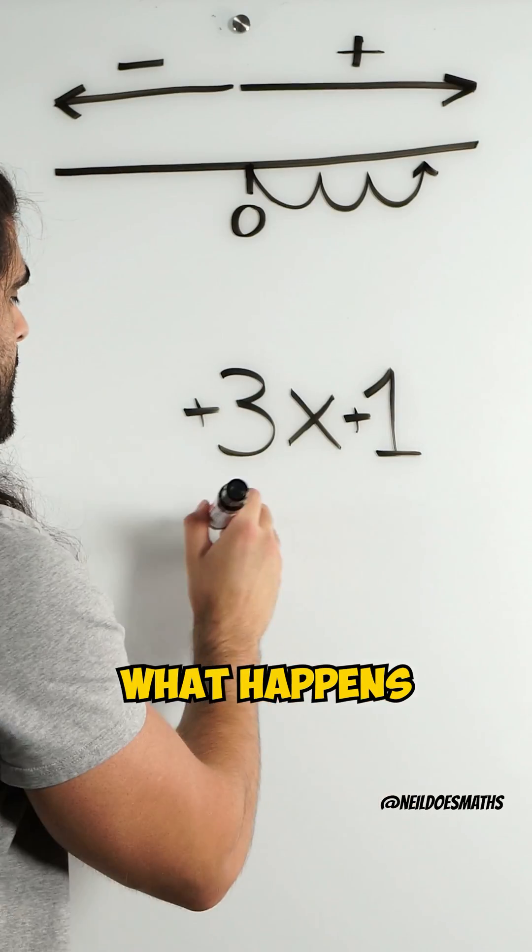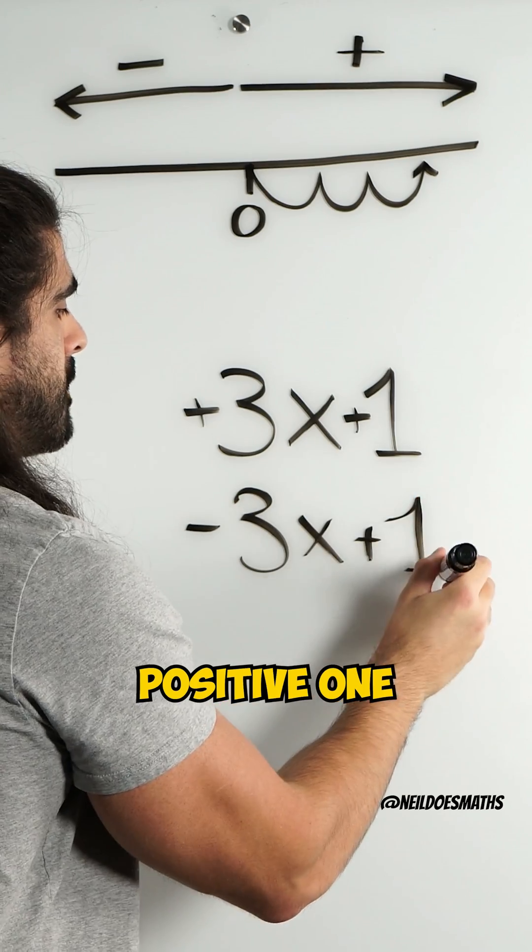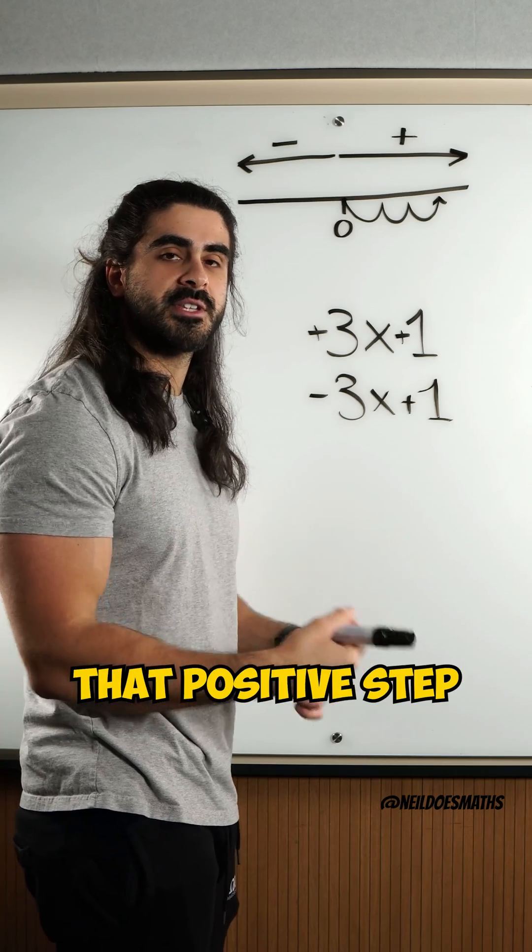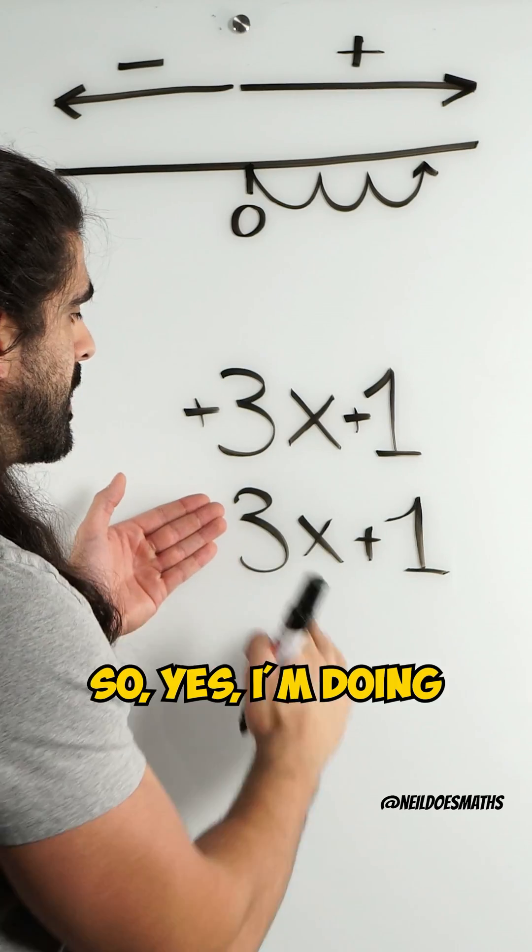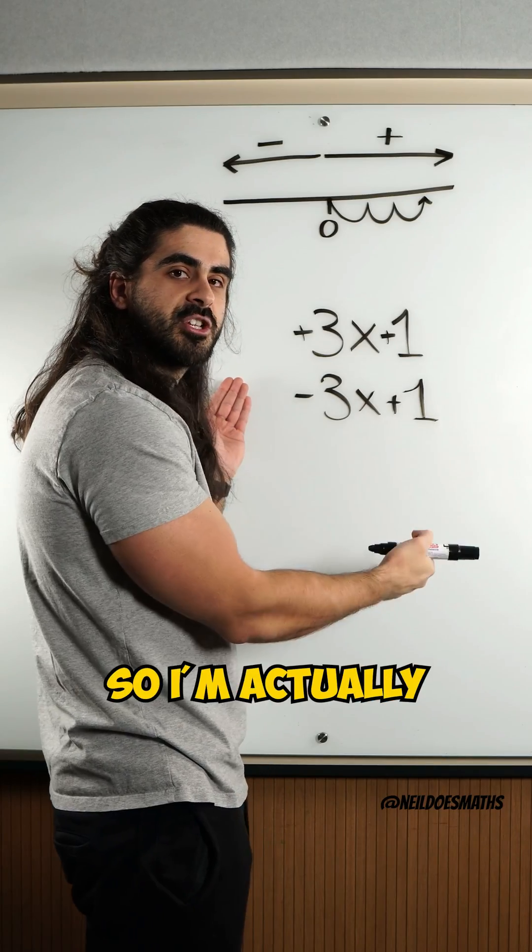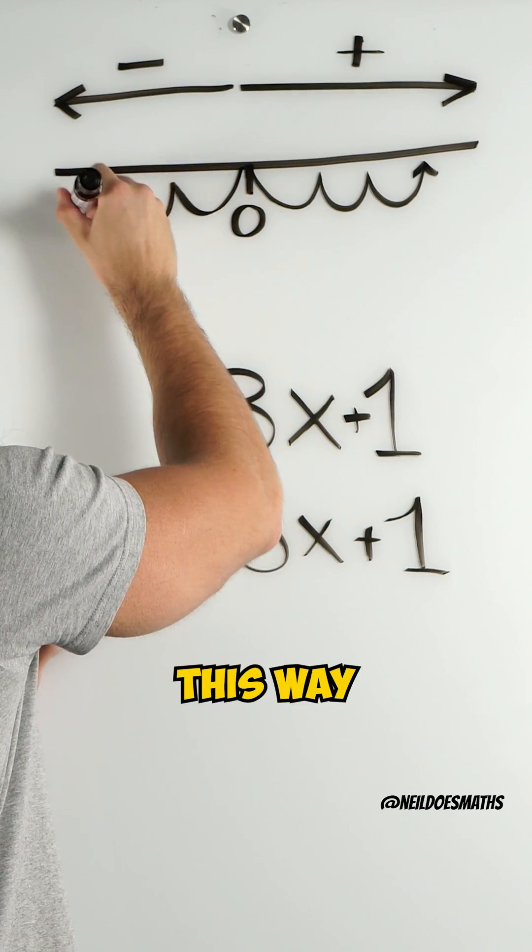What happens if I take minus 3 times positive 1? The minus is negating that positive step. So yes, I'm doing 3 lots of a positive step, but I'm negating that. So I'm actually walking 3 steps back. I'll be moving this way 3 steps.